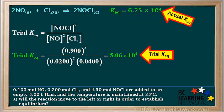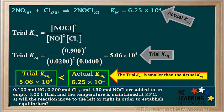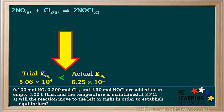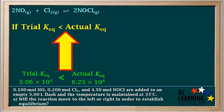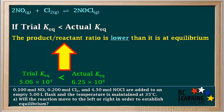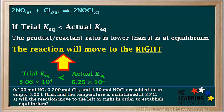The original question told us that the actual Keq is 6.25 × 10⁴. So at this point we compare these two values. We see that trial Keq (5.06 × 10⁴) is smaller than the actual Keq (6.25 × 10⁴). If the trial Keq is smaller than the actual Keq, this means the product-to-reactant ratio is lower than it would be at equilibrium — too low for the system to reach equilibrium. In order to increase the ratio of products to reactants, the reaction will move to the right.